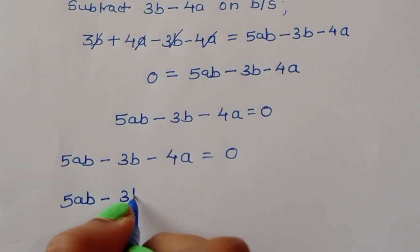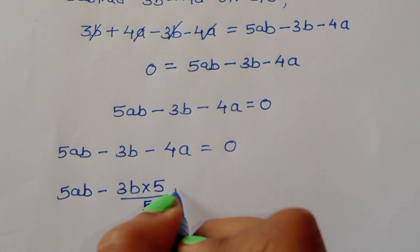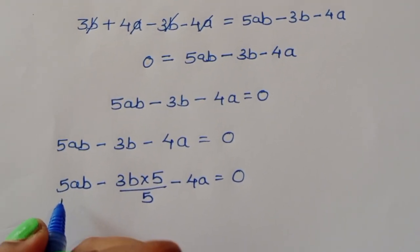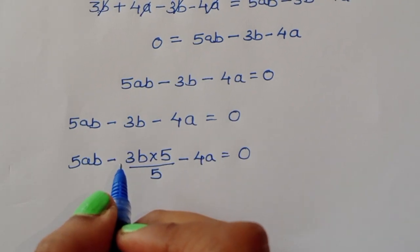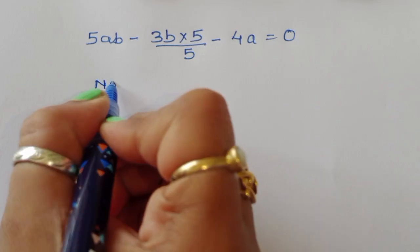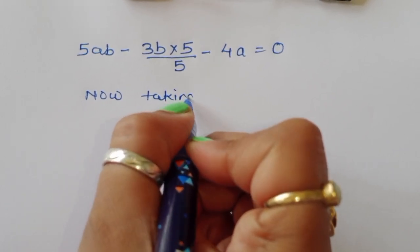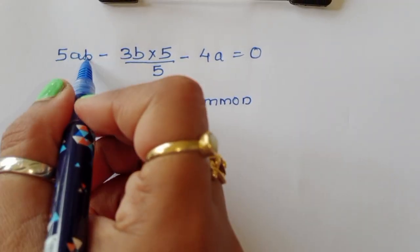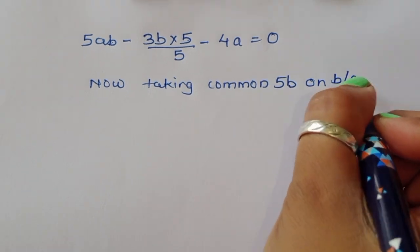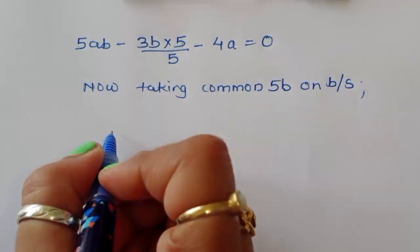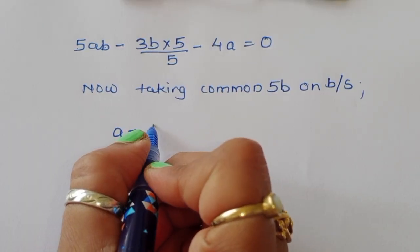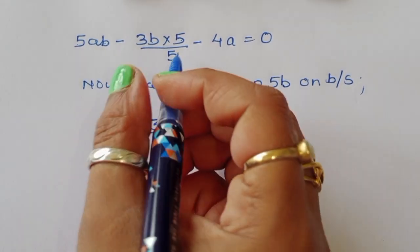We multiply and divide by 5 in this expression. So we get 5ab minus 3b times 5 divided by 5 minus 4a equals 0. Taking 5b as a common factor, we get 5b times (a - 3/5) minus 4a equals 0.